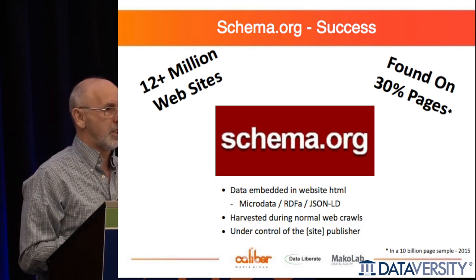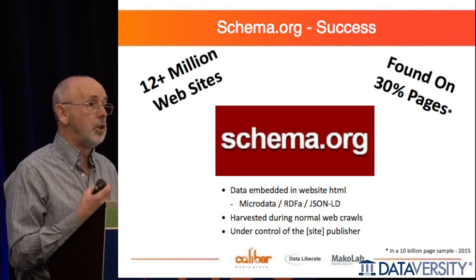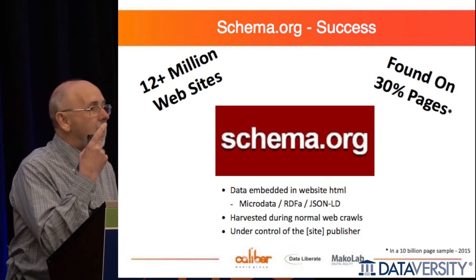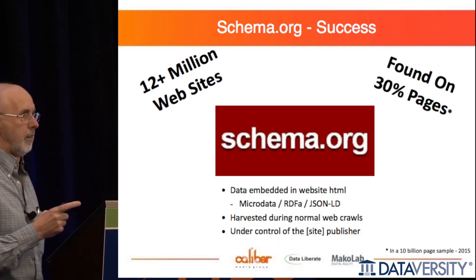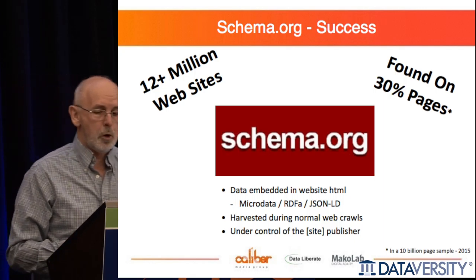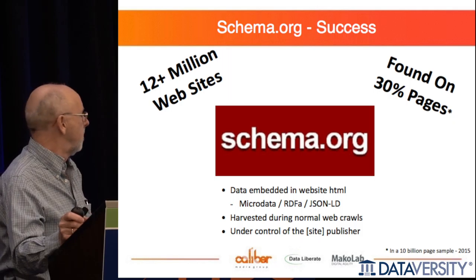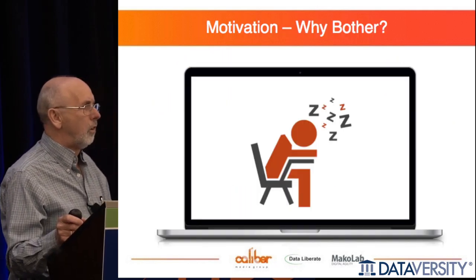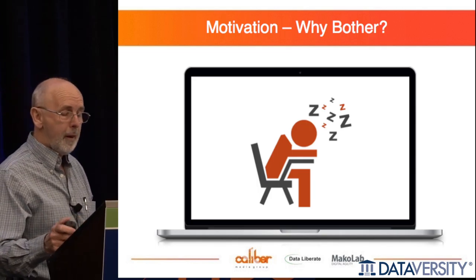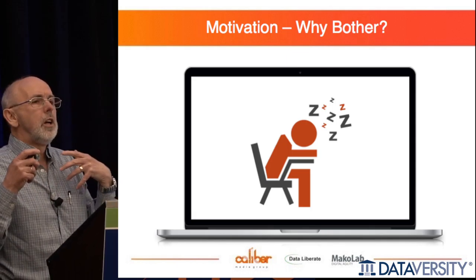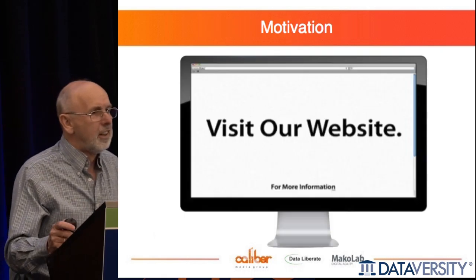This success is reflected in usage. At the end of last year it was identified that over 12 million websites are using schema.org. In a 10 billion page sample that Google analysed, 30% of those pages had schema.org markup. That's a significant portion of the web. But why is it relevant to us? Why are our organisations worried about this context?